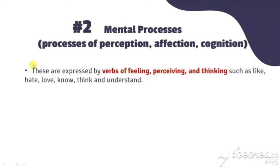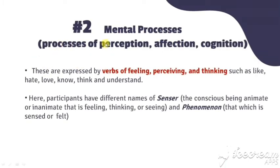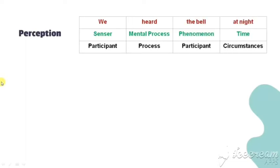The second is mental process, or process of perception, affection, and cognition. These are expressed by verbs of feeling, perceiving, and thinking — such as like, hate, love, know, think, understand, etc. The participants have different names: sensor refers to the conscious being, animate or inanimate, that has feeling, thinking, or seeing; and phenomenon is what is sensed or felt.